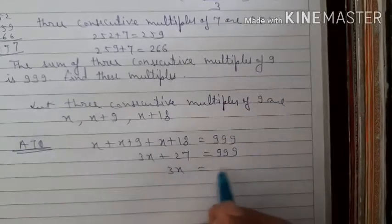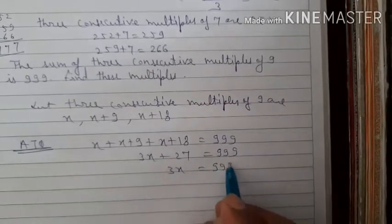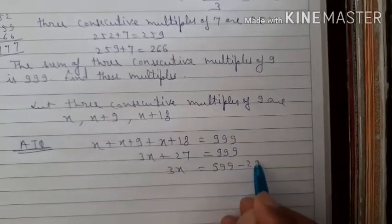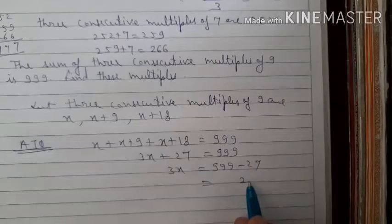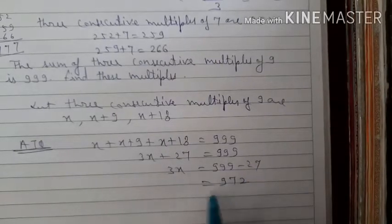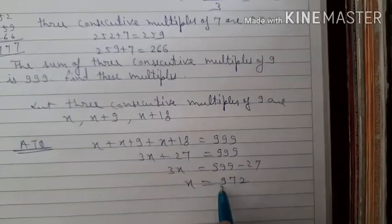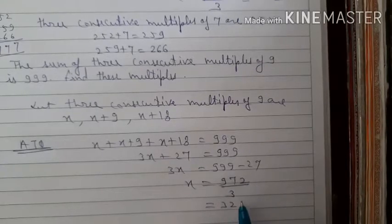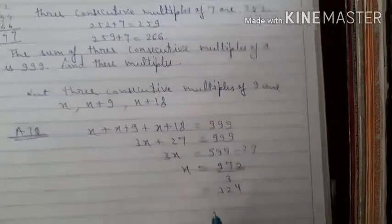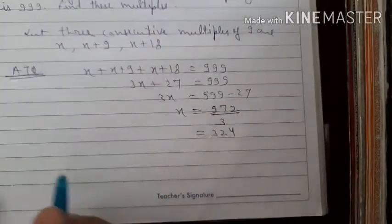So x plus (x plus 9) plus (x plus 18) equals 999, giving 3x plus 27 equals 999. Therefore 3x equals 999 minus 27 equals 972, so x equals 972 by 3, which equals 324.